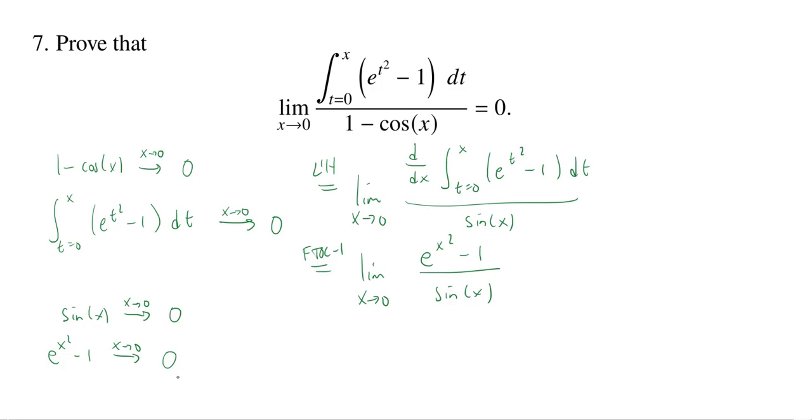But I can use L'Hôpital's rule again. As x goes to 0, now I take a derivative. The derivative of e to the x squared is, by the chain rule, 2x times e to the x squared. The derivative of minus 1 is 0, over the derivative of sine, which is cosine.